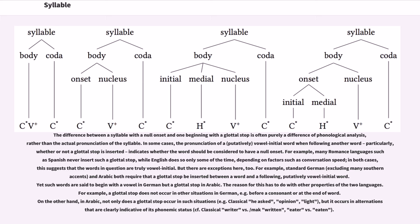But there are exceptions here, too. For example, Standard German and Arabic both require that a glottal stop be inserted between a word and a following, putatively vowel initial word. Yet such words are said to begin with a vowel in German but a glottal stop in Arabic. The reason for this has to do with other properties of the two languages. For example, a glottal stop does not occur in other situations in German, for example before a consonant or at the end of word. On the other hand, in Arabic, not only does a glottal stop occur in such situations, but it occurs in alternations that are clearly indicative of its phonemic status.